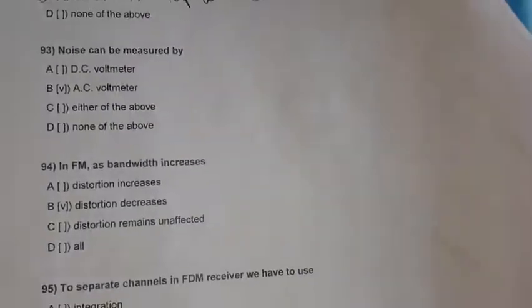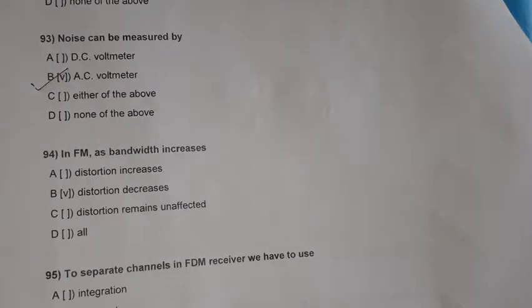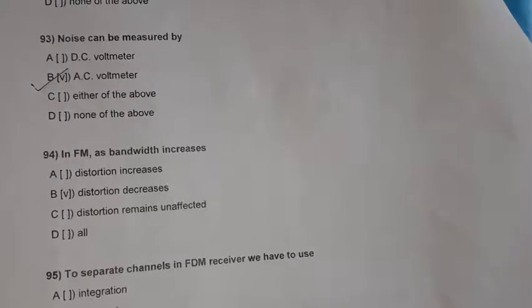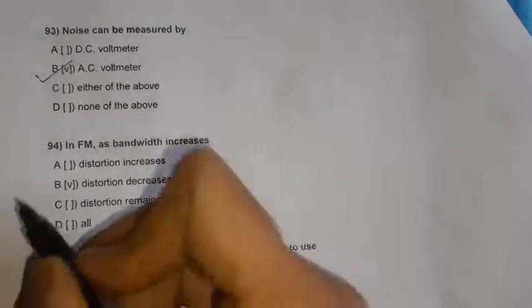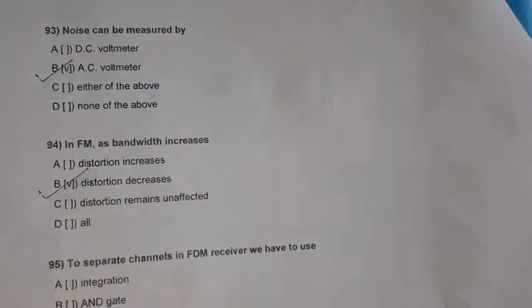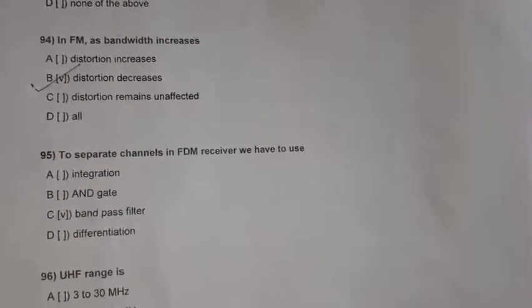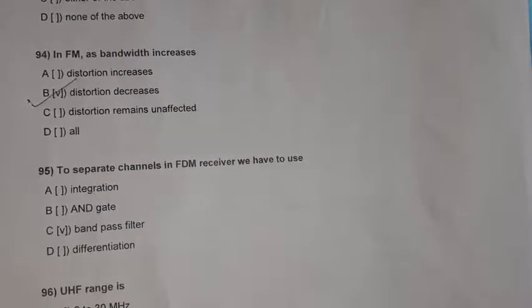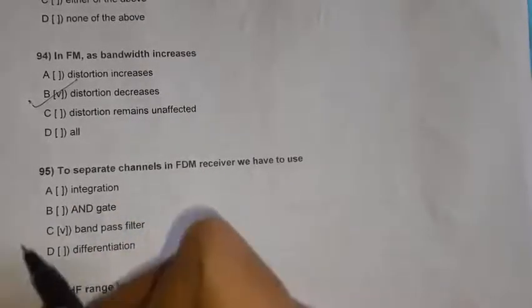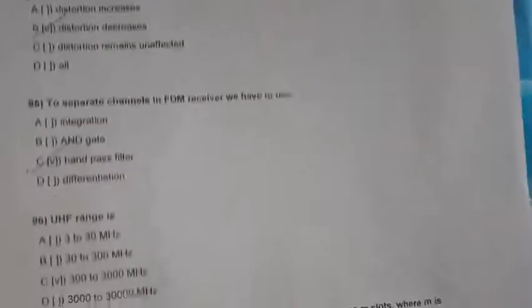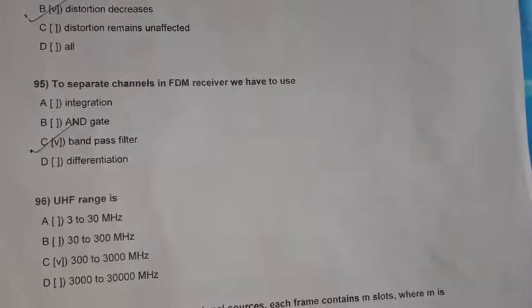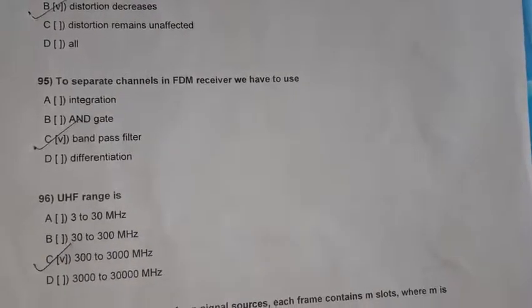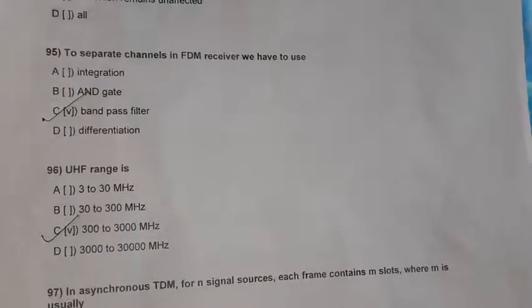Question 93: Noise can be measured by an AC voltmeter — option B. Question 94: In FM, when bandwidth increases, distortion automatically decreases. Question 95: To separate channels in an FDM receiver, we use a band pass filter. Question 96: UHF range is 300 to 3000 MHz — option C.